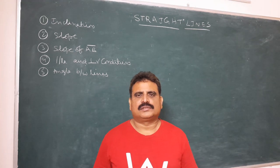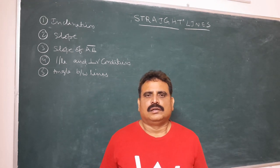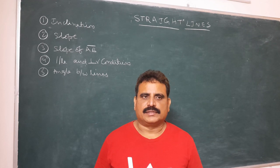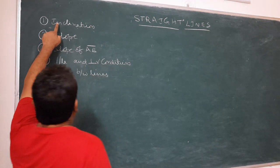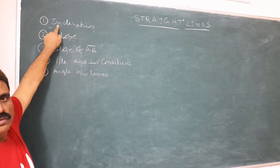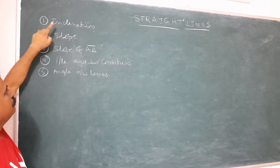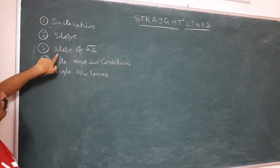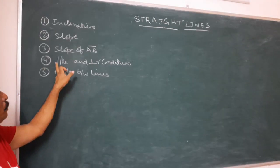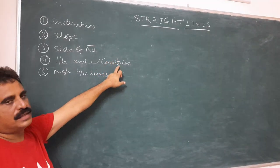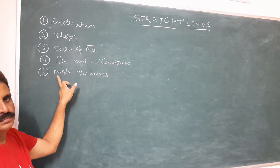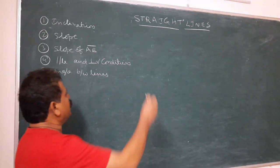Good morning students. In this video we discuss the concepts of straight lines. There are five concepts: first, inclination; second, slope; third, slope of AB bar; fourth, parallel and perpendicular conditions; fifth, angle between lines. Now inclination, the first point.